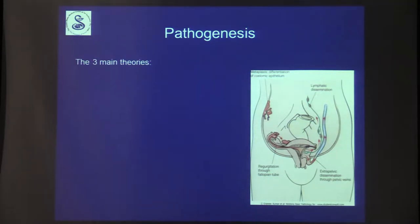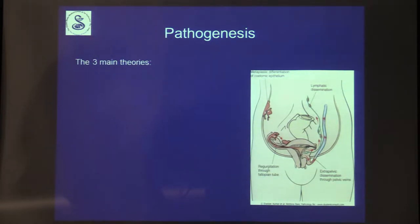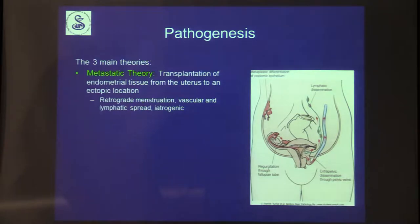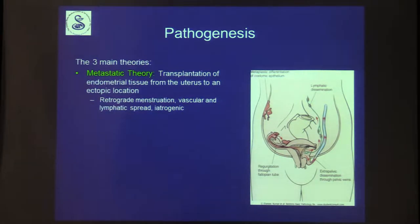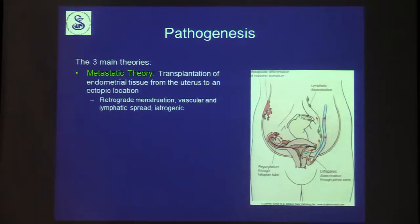There are three main theories of how endometriosis came to be, and each can explain some of the locations. The most popular is the metastatic theory — transplantation of endometrial tissue from the uterus to ectopic locations — explained either by retrograde menstruation or by spread through the vascular and lymphatic systems, or iatrogenic spread, such as after cesarean section where you can see endometriosis in the tract and abdominal wall.